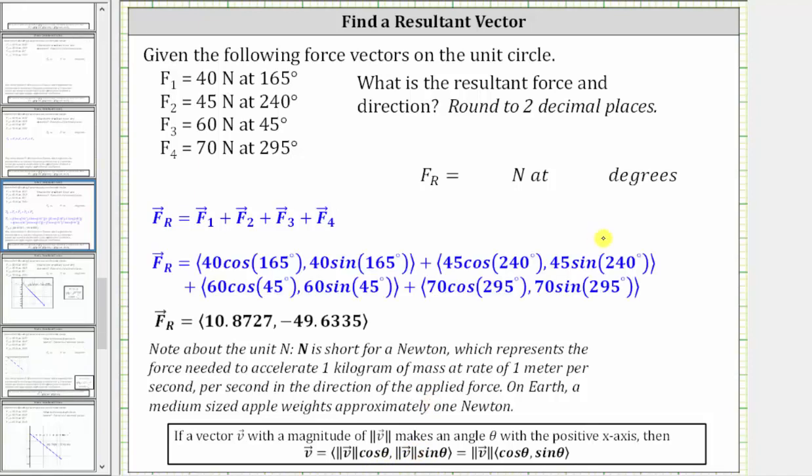So to save some time, I've already written this out. For the first vector, notice how the x component is 40 times cosine 165 degrees. For the second force vector, the x component is 45 times cosine 240 degrees. For the third vector, the x component is 60 times cosine 45 degrees. And for the fourth vector, we have 70 times cosine 295 degrees.